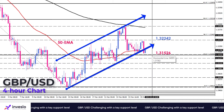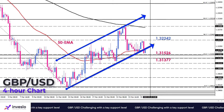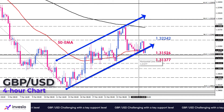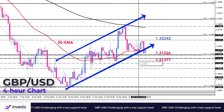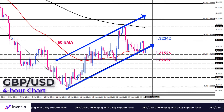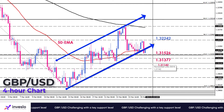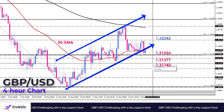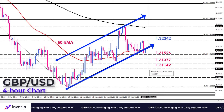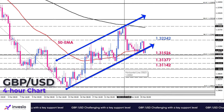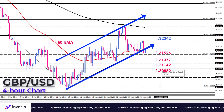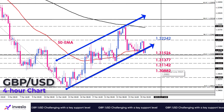A break below 1.31526 can put the 1.31377 mark in the spotlight. A further decline below this level can send the pair towards 1.31142. Intensifying negative momentum can then push GBPUSD towards the 1.30882 barrier as lower support.